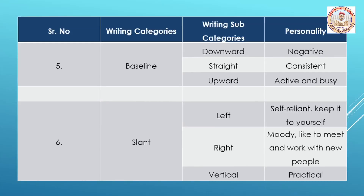Coming to the baseline — looking at how letters are written on the page — if the baseline is going downwards, then the person has a bit of a negative approach. If it is going straight, then the person is consistent. If it is going upward, then the person is very active.